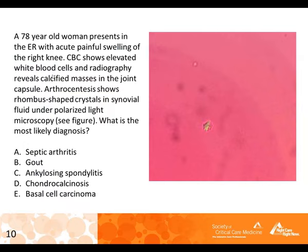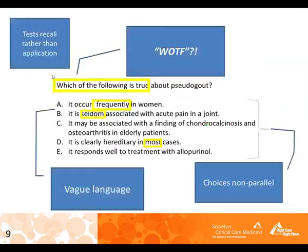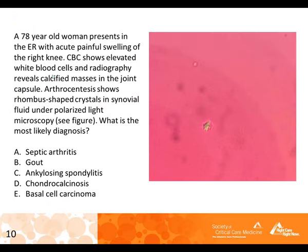Here's a better version on a similar topic: 'A 78-year-old woman presents in the ER with acute painful swelling of the right knee. CBC shows elevated white blood cells. Radiography reveals calcified masses in the joint capsule. Arthrocentesis shows rhombus-shaped crystals in synovial fluid under polarized light microscopy.' With a picture included: 'What is the most likely diagnosis?' The answer: chondrocalcinosis, the technical term for pseudogout. This is obviously a much better item — more content in the stem, focused answer choices, no vague language.